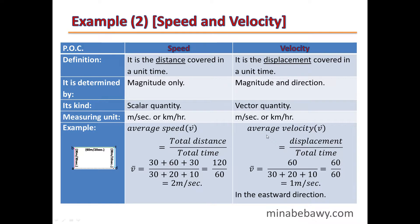To calculate average velocity, the formula is displacement over total time. To find the displacement, we identify the starting point A and the ending point D. The straight-line distance between them is AD, which equals 60 meters because the shape is a rectangle. So displacement = 60 meters in the direction of AD. Average velocity = 60 ÷ 60 = 1 meter per second in the eastward direction.